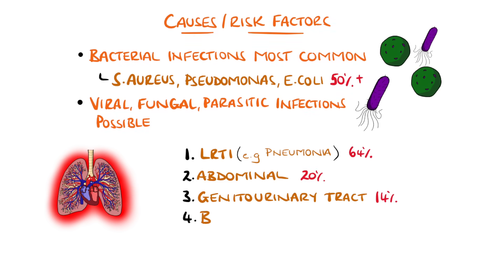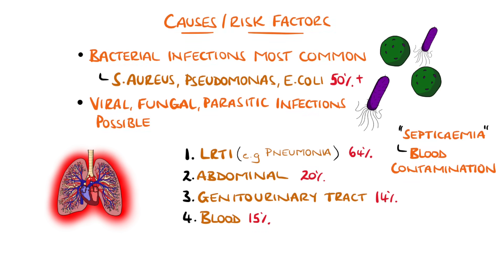Sepsis is sometimes referred to as septicaemia, which means poisoning of the blood. But the blood does not necessarily need to be contaminated to cause sepsis — it is infected in around 15% of cases. In up to one third of cases, no source of infection is found.